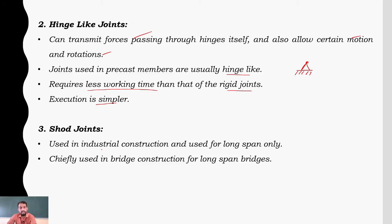Then comes short joints, used in industrial construction and for long span only. They are chiefly used in bridge construction, especially for long-span bridges.